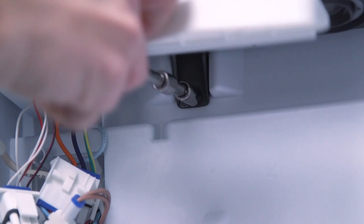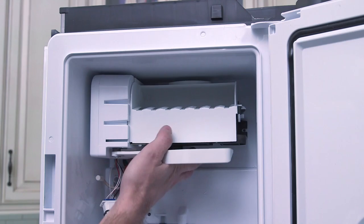Unscrew and remove the bottom center 5/16 inch hex head screw that attaches the ice maker to the ice box. Then lift and remove the ice maker.